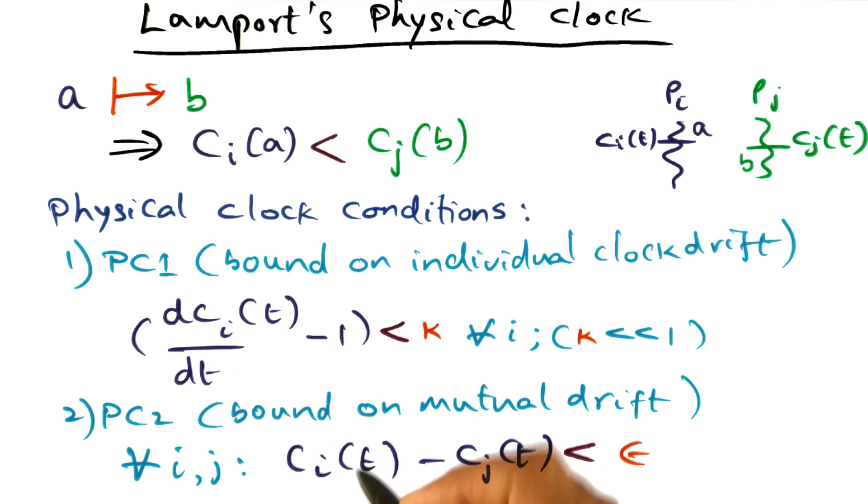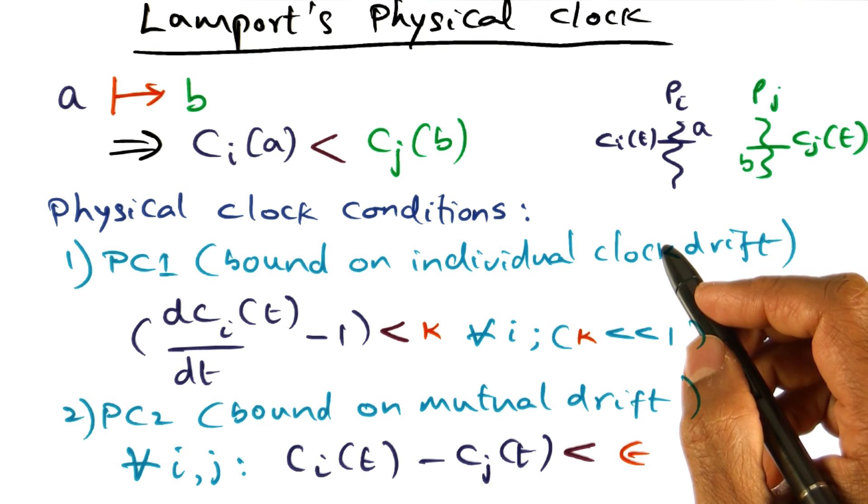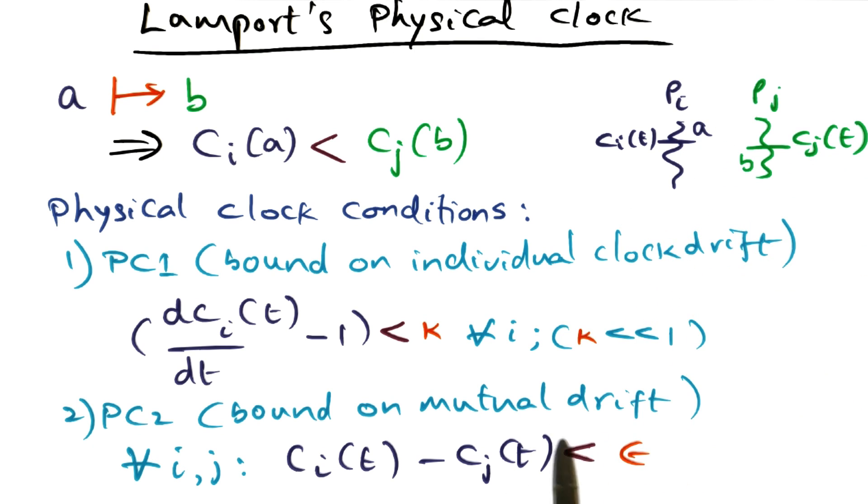The second condition is that the mutual drift between the clocks on different nodes of the distributed system should be very small. There should be a bound on mutual clock drift.